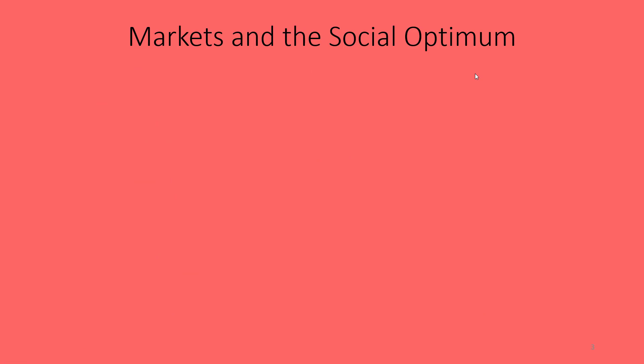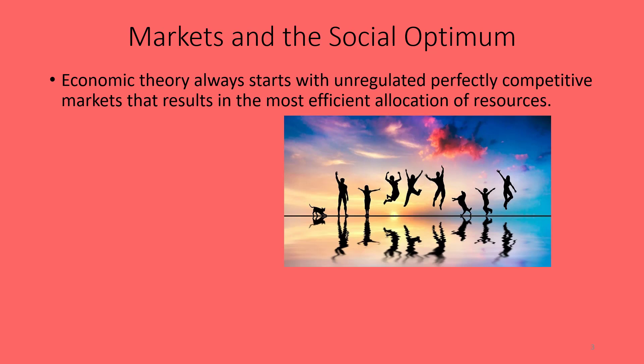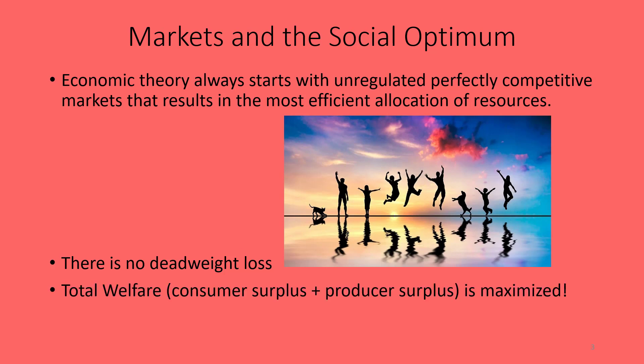Let's talk about markets and the social optimum. Economic theory starts with the idea of an unregulated, perfectly competitive market that results in the most efficient allocation of resources — the economist's dream of free markets working in the best possible way for everybody. There is no dead weight loss in these perfectly unregulated markets, and total welfare — consumer surplus plus producer surplus — is maximized.